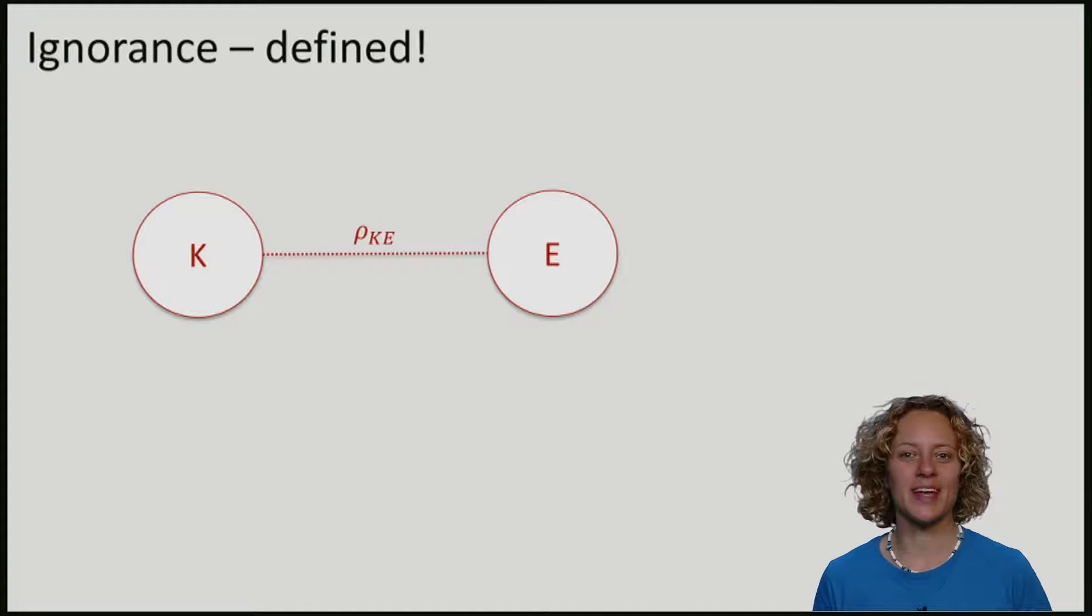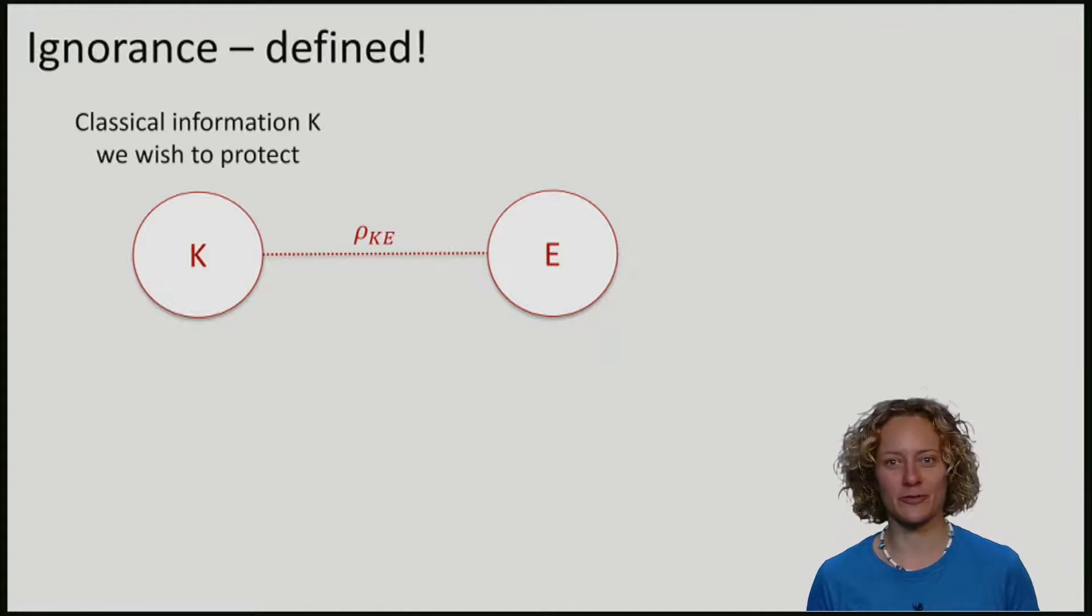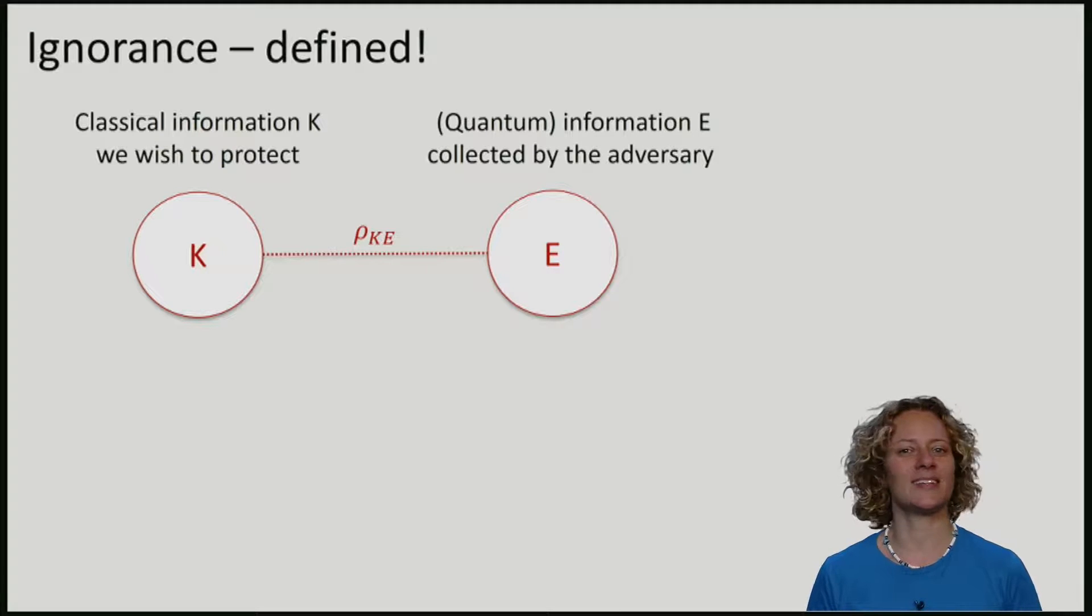We will consider a CQ state, where K is some classical information that we want to protect, for example the key, and E is some quantum information collected by the adversary.